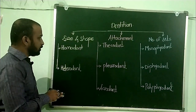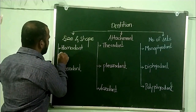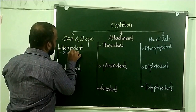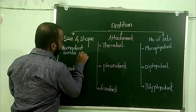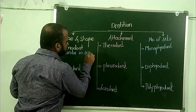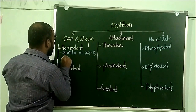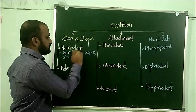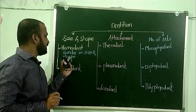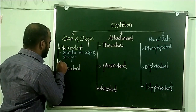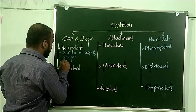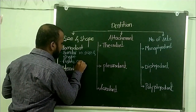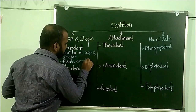In case of the Homodont condition, all teeth are similar in size and shape. If you look at the Homodont condition, whatever the size and shape of the teeth, it is similar. The examples include lower vertebrates like fishes, amphibians, etc.